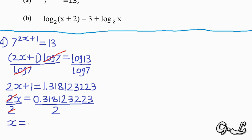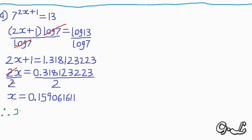We then divide both sides by 2, giving x equals approximately 0.15906161. Therefore the value of x is equal to 0.16, rounded off. This is how you answer such questions and score marks in an exam.